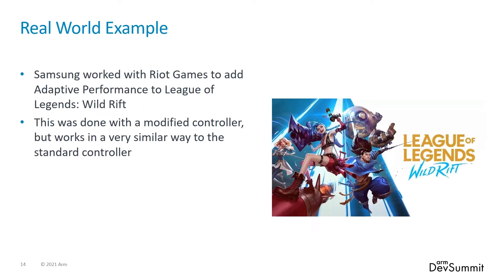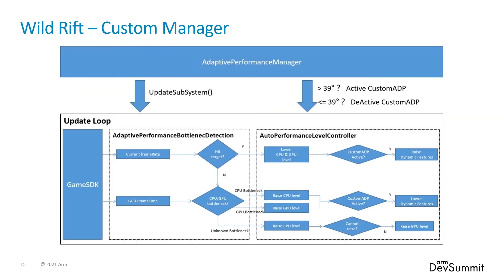Now I'll talk briefly about a real-world example of how adaptive performance has benefited a recent title. Samsung worked with Riot Games to add adaptive performance to League of Legends: Wild Rift, using a modified adaptive performance controller for extra flexibility. This is a flowchart of how adaptive performance works in Wild Rift. The initial check is whether the game is running at the target frame rate. If it is, CPU and GPU levels can be lowered, or dynamic features increased. If not, a check is made for whether CPU or GPU is the bottleneck, or if the device is above a certain temperature, some dynamic features are reduced. Things like level of detail for characters and shadow detail were checked with the game team to ensure quality changes were acceptable. The results were an improvement in stability from around 75% to around 95%.